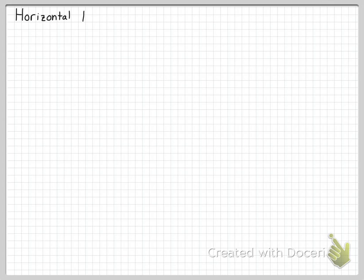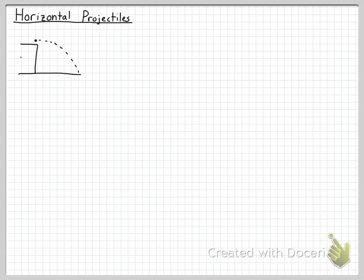This video is about horizontal projectiles. We usually represent this as an object being thrown perfectly horizontal at zero angle off a cliff — it's the easiest way to visualize it. We're going to look at a cannonball being launched out of a cannon off a cliff that is 42 meters high, and we're going to determine how far it goes horizontally. The ball comes off at 100 meters per second.